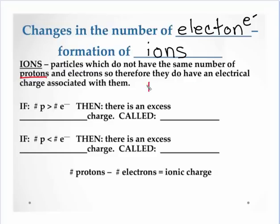But what we can do is either gain electrons or lose electrons. Now that gets kind of tricky because we're gaining and losing negative charges. And then we're going to use this relationship that my count of protons minus my count of electrons will give us that ionic charge.